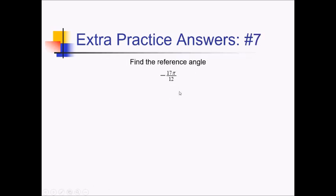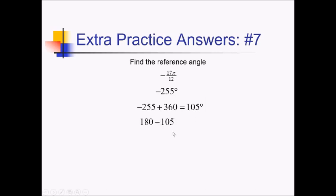On this problem, we're trying to figure out the reference angle. I'm going to start by converting it into degrees, multiplying by 180 over pi. 180 divided by 12 is 15, and 15 times 17 — 15 times 15 is 225, plus another 30 — is 255. So this is negative 255 degrees. To get a reference angle, let me make it a positive angle first by adding 360. That's going to give me 105. Now I just subtract from the closest x-axis angle: this is closest to 180, so 180 minus 105 gives us a reference angle of 75 degrees.